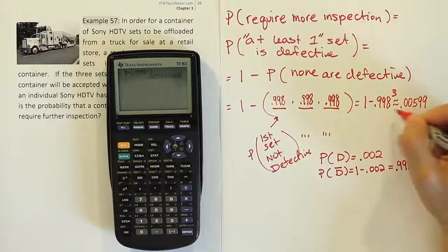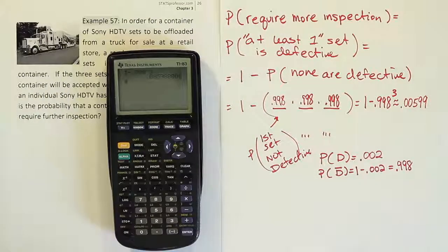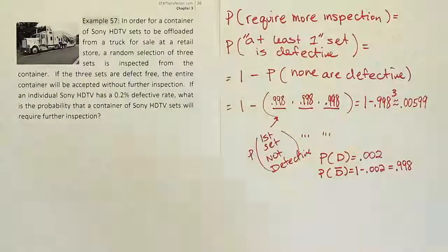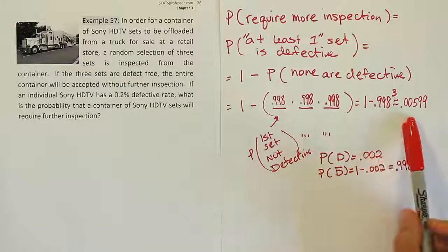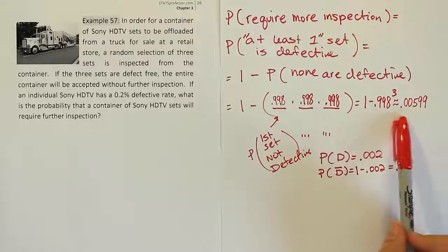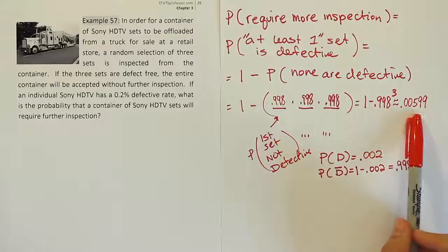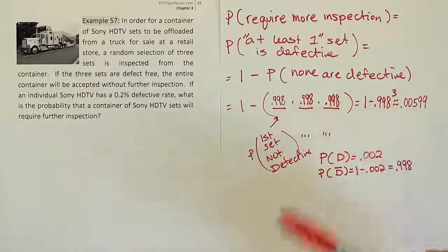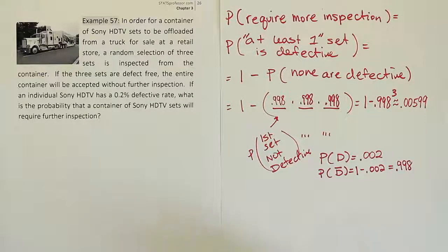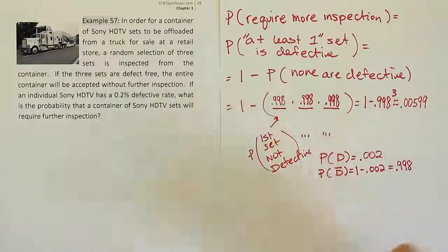So that's our answer. And that's a very small probability. That's about 0.6 of 1%, so it's not even 1%, less than 1% chance. So if I asked, does Sony have to worry about requiring further inspection, given that they have this defect rate for their TVs? I would say no, not really. It's a pretty rare scenario where they would actually have to have three more sets taken from the truck for inspection. It looks like for the most part, they can get away with just three sets being selected because more than 99% of the time, it's going to be okay. And that's the answer to the question then. So the chance they require more inspection is less than 1%, about 0.599%.